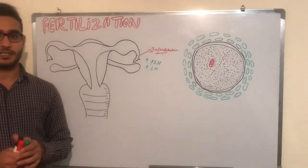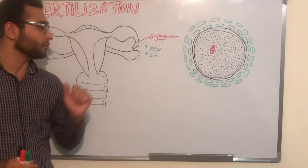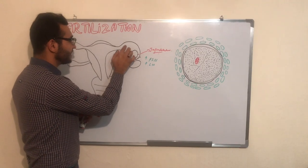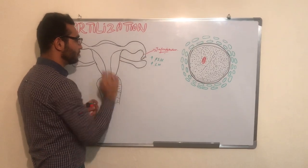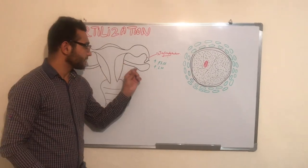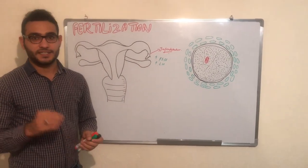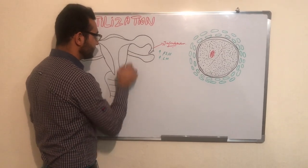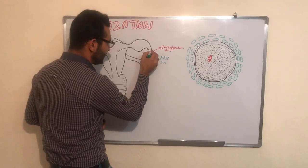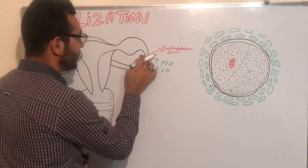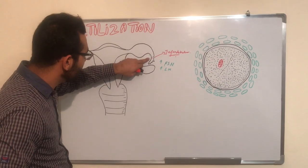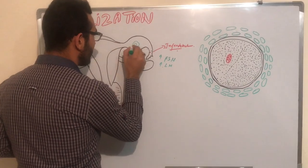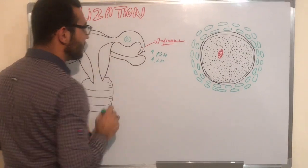Fertilization occurs at the ampulla region of the fallopian tube, but the ovum is non-mobile. So how does the ovum reach the ampulla? The fallopian tube is made up of ciliated columnar epithelial cells. These cilia help move the ovum and transport it to the ampulla region of the fallopian tube.